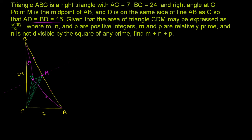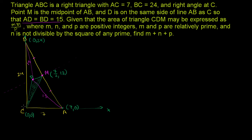We could use coordinates for some of these points. Point A is going to have x-value 7, so A is (7, 0). The coordinate for C is (0, 0). The coordinate for B is (0, 24). So the coordinate for M is just the average of B and A: the x-coordinate is 7/2, and the y-coordinate is the average of 24 and 0, which is 12.